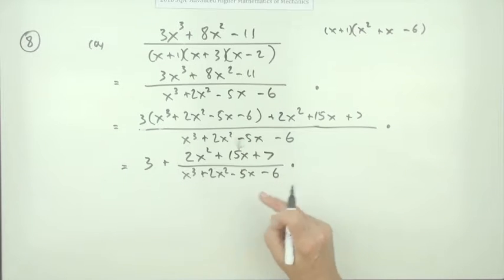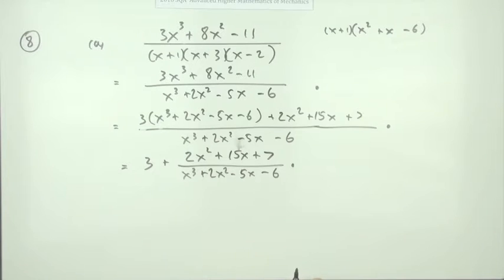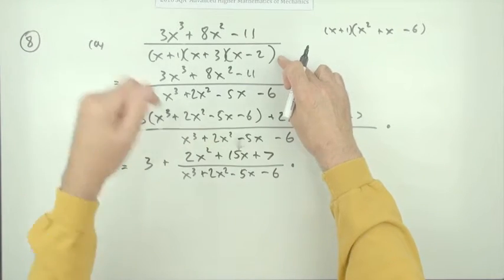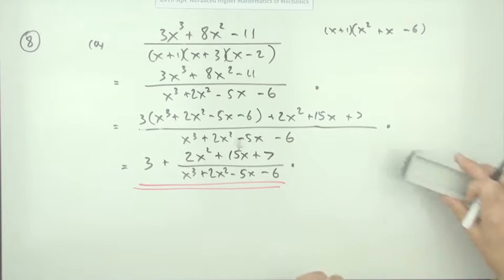The marks would be for this rearrangement—a mark—and for the final answer showing what was required—a mark. Notice I left it in that form because it said show it can be written as the expanded form, but you're going to get the mark according to the marking scheme if you put it back into that form. That was the first part, either the setting out as a piece of algebraic manipulation if you did the division.